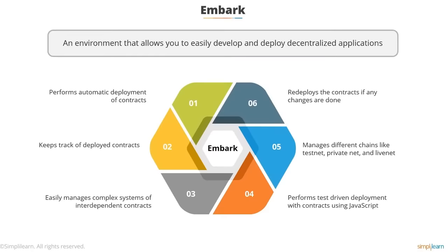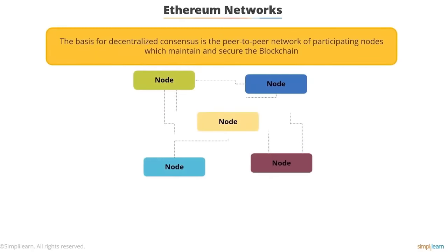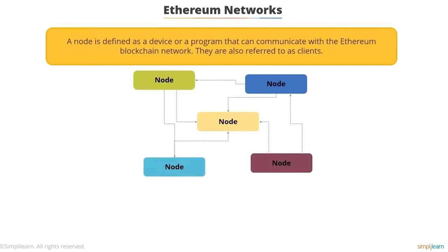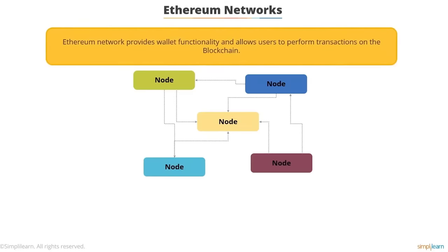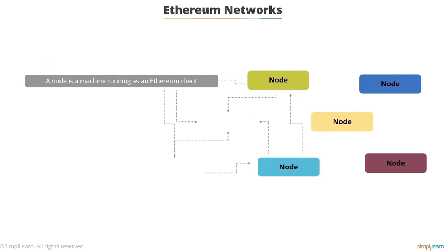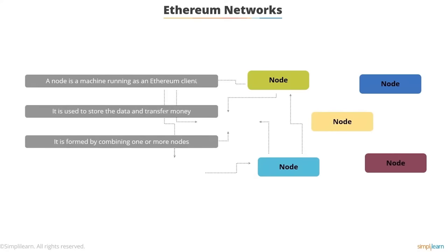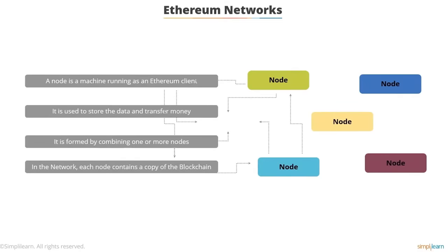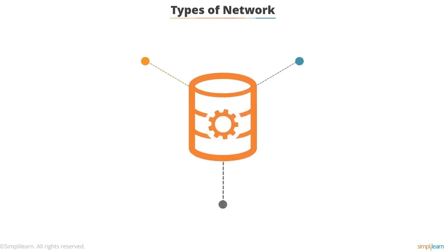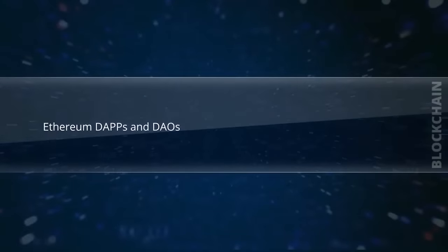Ethereum networks: the basis for decentralized consensus is the peer-to-peer network of participating nodes that maintain and secure the blockchain. A node is a device or program that can communicate with the Ethereum blockchain network — also referred to as clients — providing wallet functionality and allowing users to perform transactions. A node serves as a machine running as an Ethereum client, used to store data and transfer money. Networks are formed by combining one or more nodes, each containing a copy of the blockchain. There are three main types of networks: the testnet, the mainnet, and the private network.